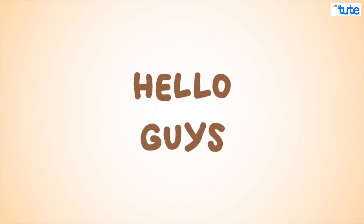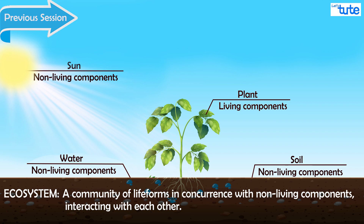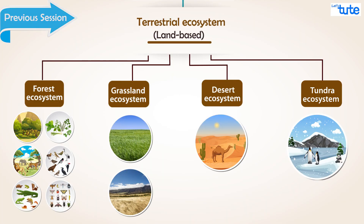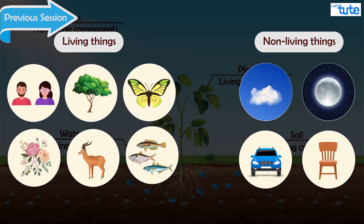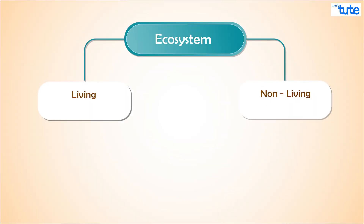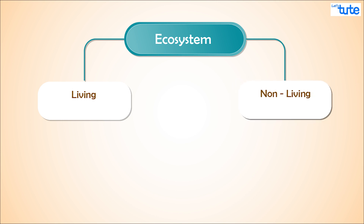Hello guys, welcome to this session on environmental science. Previously we saw some important concepts related to an ecosystem, like what is an ecosystem and what are its different types. If you recollect, in the previous example we said that living and non-living things are interdependent. Yes, these living and non-living things are the basic components of the ecosystem.